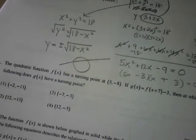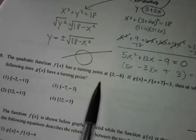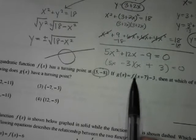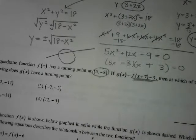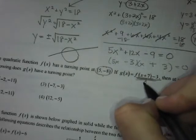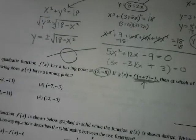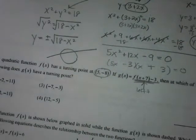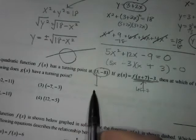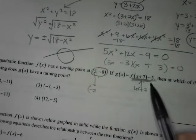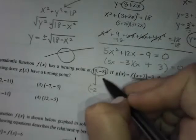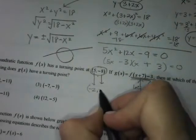Transformations: there's a turning point at (5, −8) on f(x). g(x) applies transformations — what does x + 7 do? Left 7, affecting the x-coordinate: 5 − 7 = −2. What does the −3 do? Down 3, affecting the y-coordinate: −8 − 3 = −11. The new turning point of g(x) is (−2, −11), which is option 1.